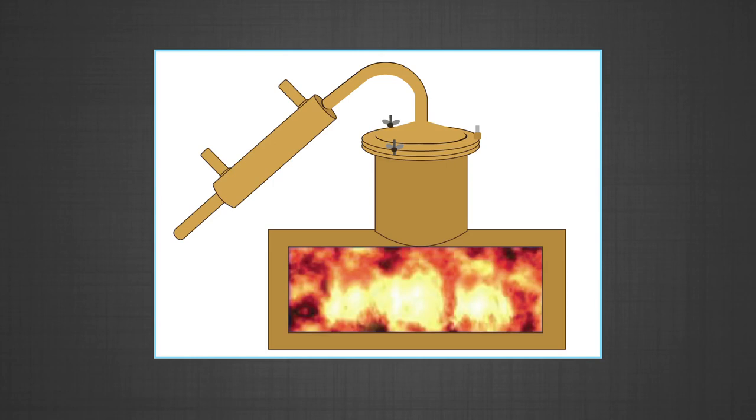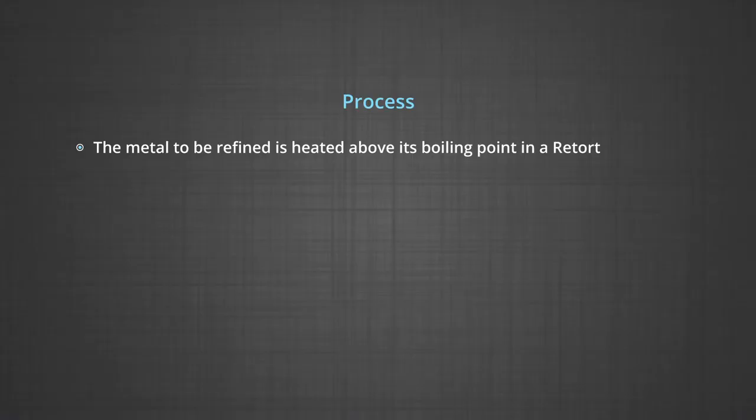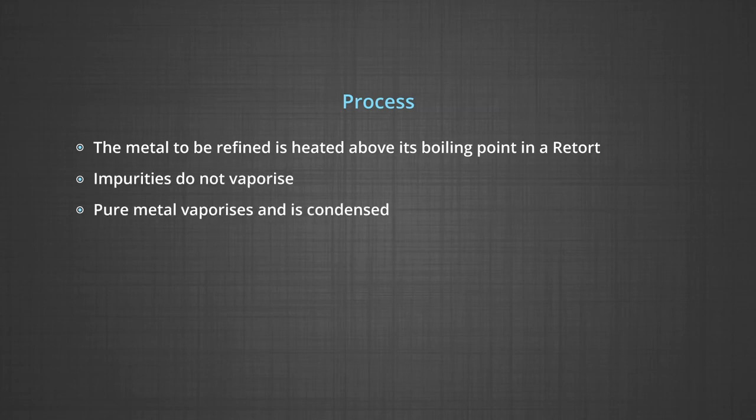The impure metal is heated in absence of air in a retort. The vapors are condensed and collected in a receiver and the non-volatile impurities are left behind in the retort. The impure metal is evaporated to obtain the pure metal as distillate. The metal to be refined is heated above its boiling point. Impurities do not vaporize. Pure metal vaporizes and is condensed. Impurities are left behind.